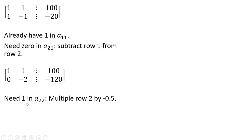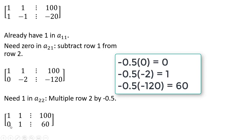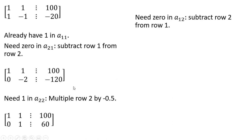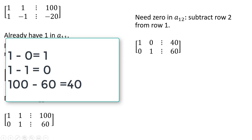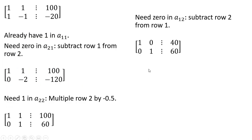Our next step is to get a 1 in row 2, column 2. The easiest way is to multiply row 2 by minus one-half. So minus 0.5 times 0 is 0; minus 0.5 times minus 2 is 1; and minus 0.5 times minus 120 is 60. Next we need a 0 in row 1, column 2, which we can do by subtracting row 2 from row 1. So 1 minus 0 is 1; 1 minus 1 is 0; and 100 minus 60 gives us 40.